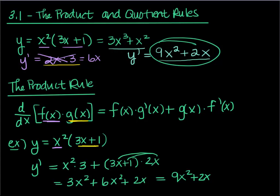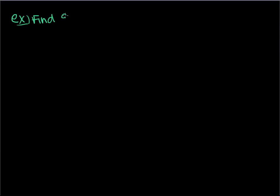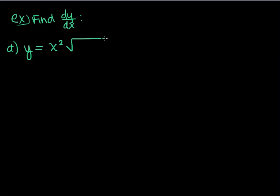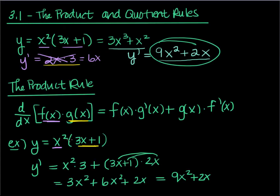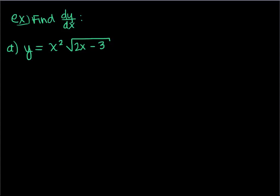Why do we care about the product rule? Let me show you another reason. What if we had something like y equals x squared times the square root of 2x minus 3? In the previous instance, I could have taken x squared and multiplied through, and I would have been fine. But if we look at something like this, it's not so easy — I can't take that x squared through the square root.